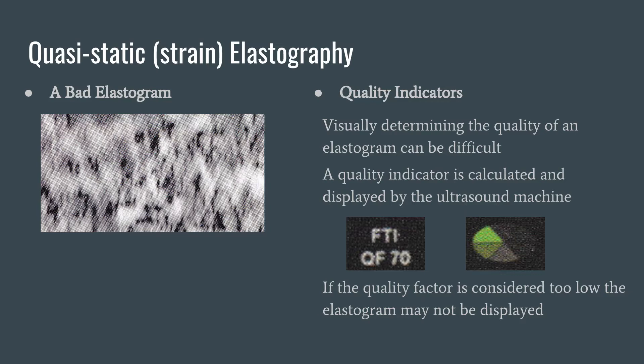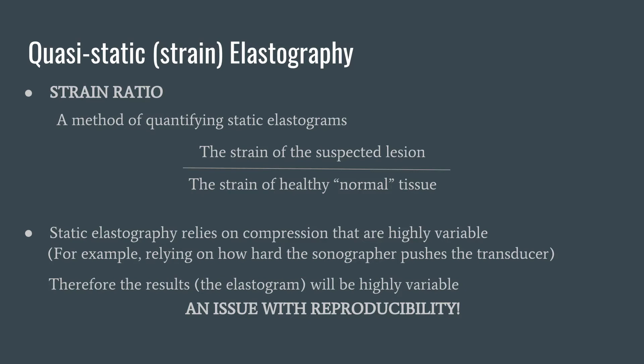Even if the displayed elastogram was considered appropriate, we would then have to determine whether an area of tissue is stiff. Some people didn't like making that decision by eye and ended up coming up with a quantitative way — a way of using numbers — to decide whether a part of tissue was stiff, being a potential lesion, or not. That is the strain ratio: a ratio of the strain of the suspected lesion divided by the strain of healthy tissue. The user would pick a point on the suspected lesion and then a point of healthy tissue, with popular choices being fat or skeletal muscles, giving the user a number.